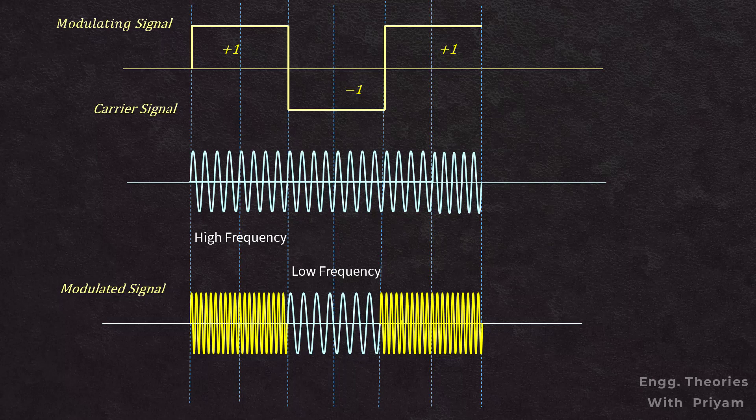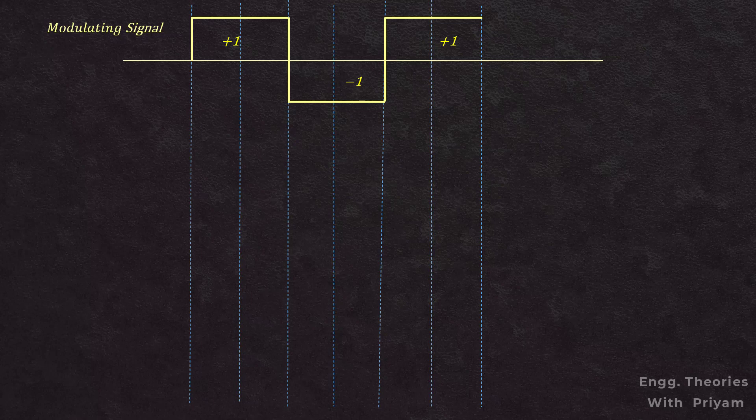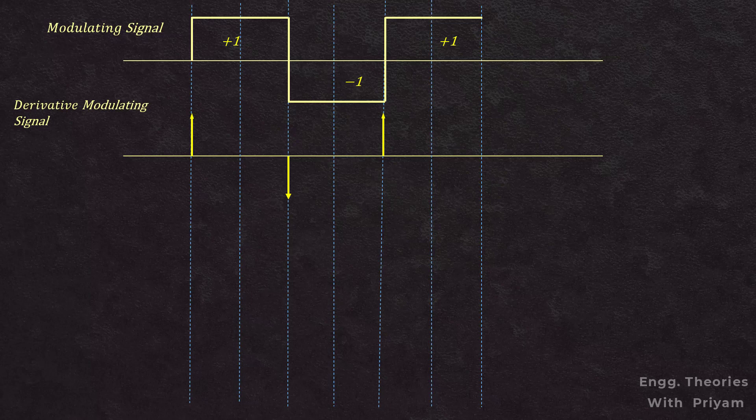To plot the phase modulated signal, we take the derivative of the modulating signal m(t). The derivative represents the instantaneous rate of change of a function — how much the function's value is changing at any given point. When the square pulse is at a constant value of 1, the derivative equals 0 because the value isn't changing. However, at points where the pulse abruptly changes from 0 to 1, there is a jump represented by a positive impulse. When the pulse changes from 1 to minus 1, the derivative jumps to minus 1, creating a negative impulse. For a complete cycle from t=0 to t=T, there will be two impulses. Therefore, the derivative of a square wave is a train of alternating positive and negative impulses.